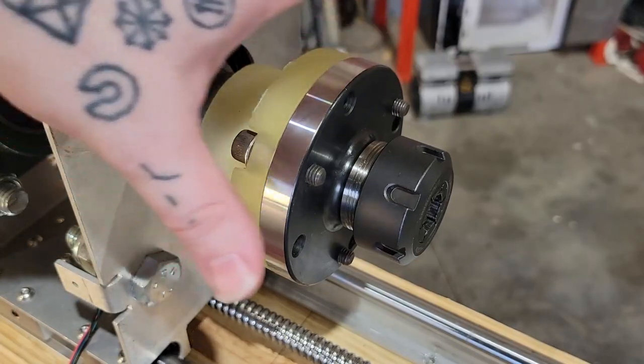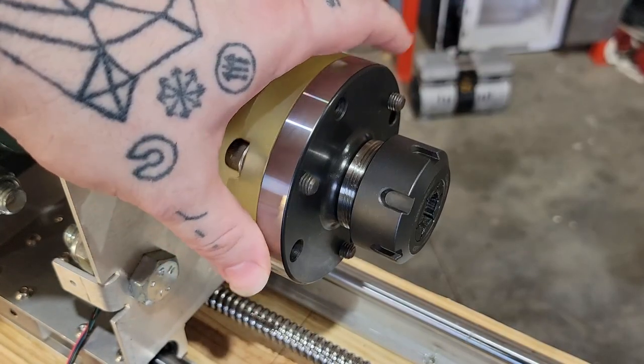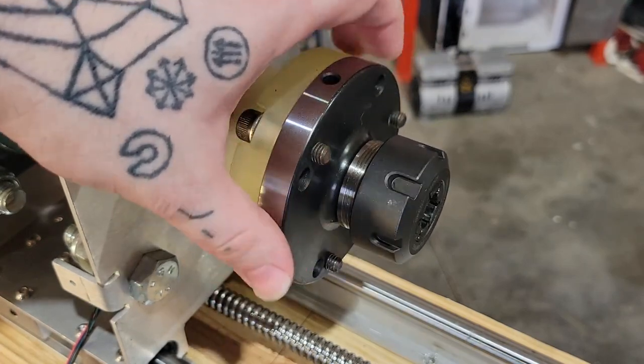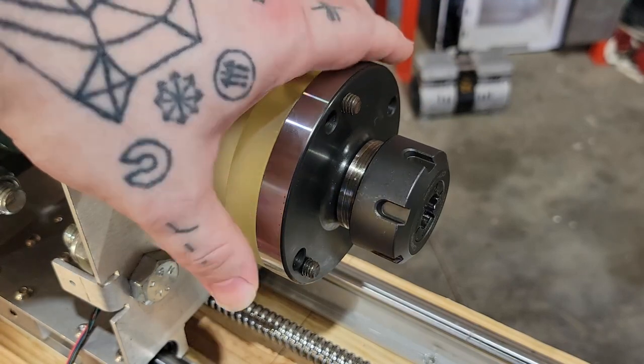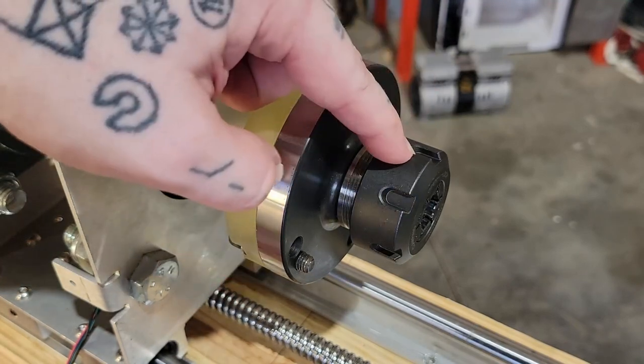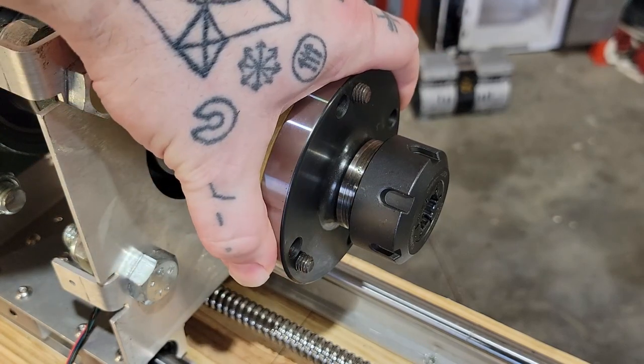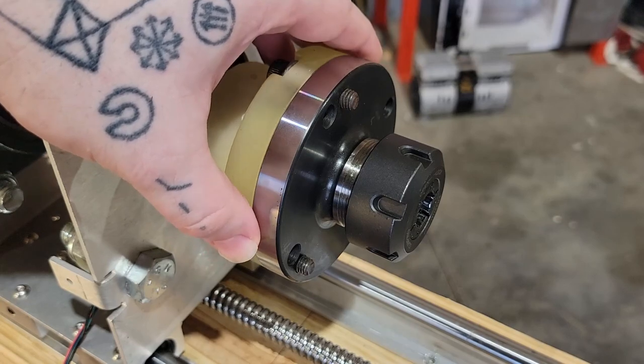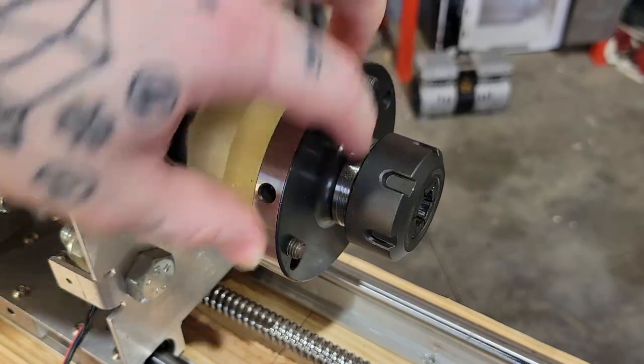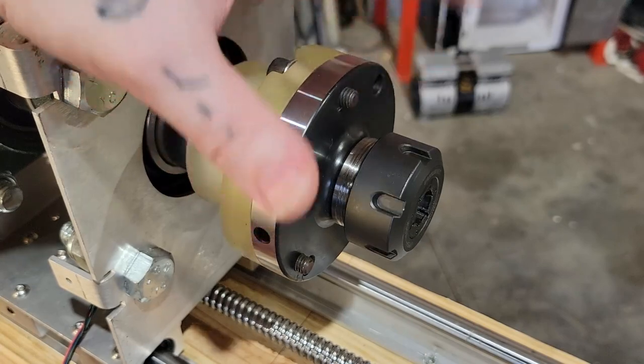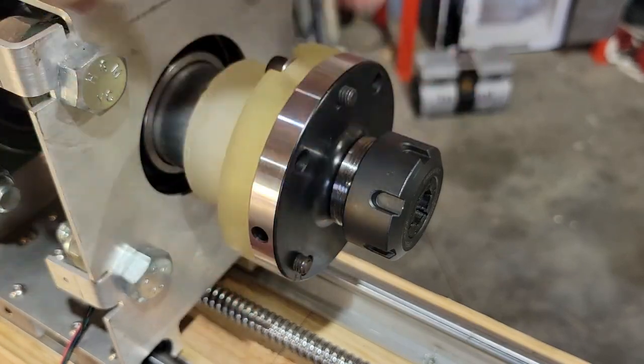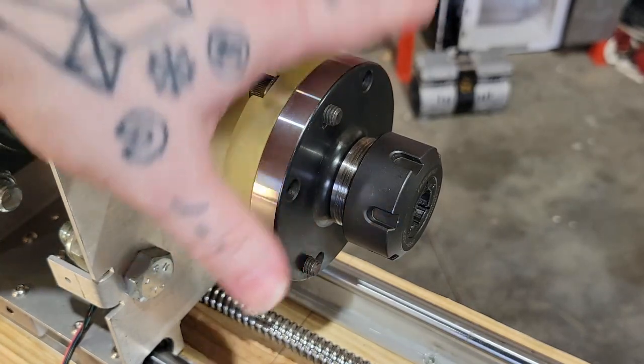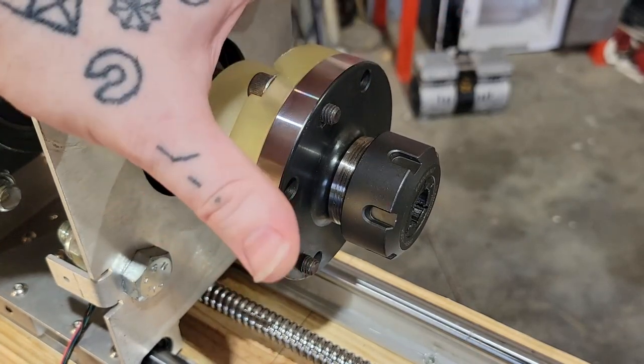The solution I came up with was to abandon the three jaw chuck entirely and move to a collet chuck. Now, there are limitations to using a collet chuck, but it solves a lot of the problems that we are having with the three jaw chuck. This is an ER32 collet chuck with a 10 centimeter mounting flange that I bought on Amazon for about $40. And this is basically bottom of the barrel for a lathe part like this. Is the accuracy perfect? Is the concentricity perfect? Probably not. It was $40. But I don't think it's really going to be an issue for the kind of work that we're doing here.